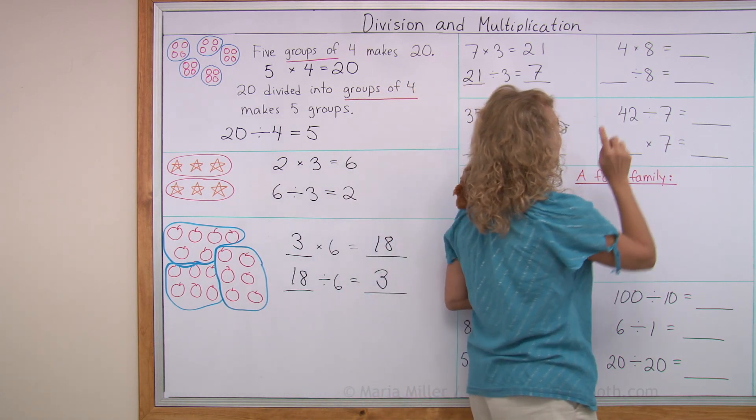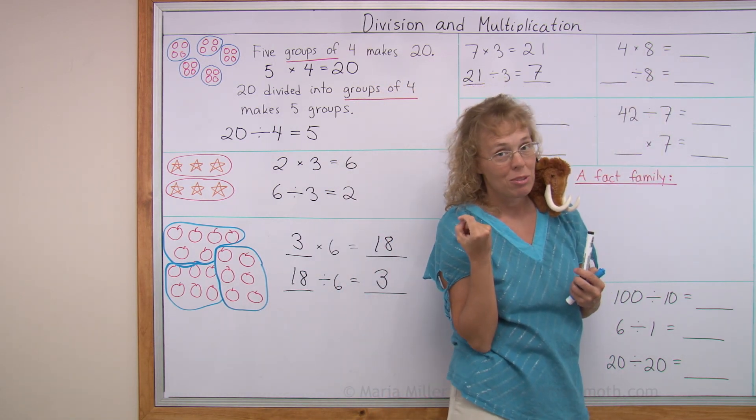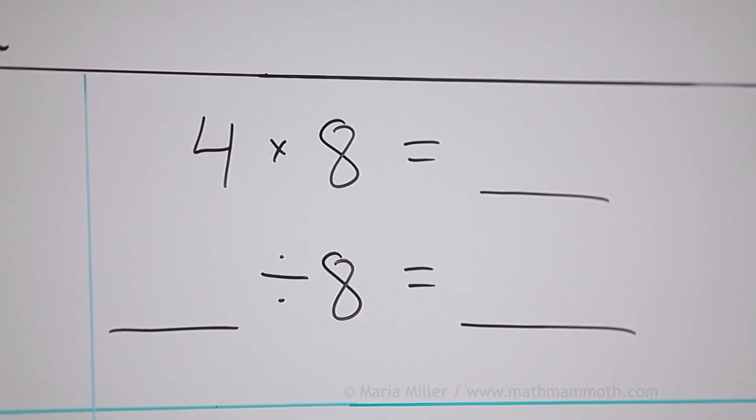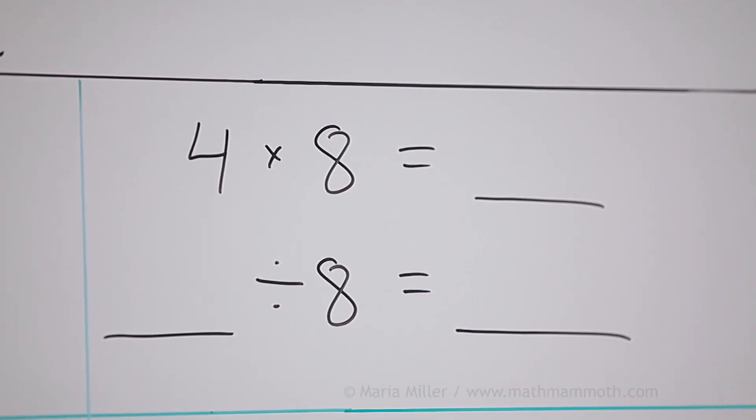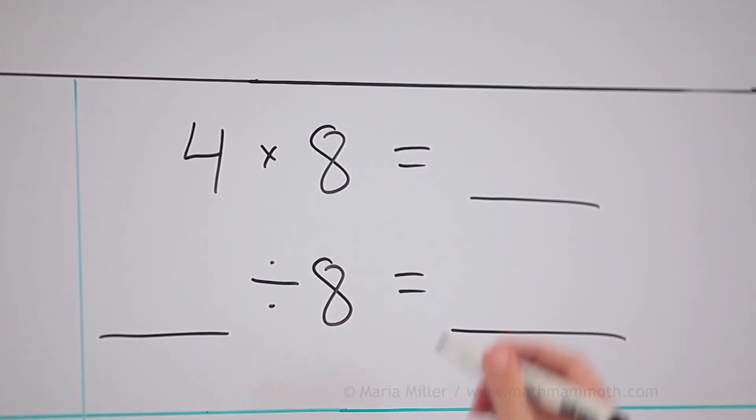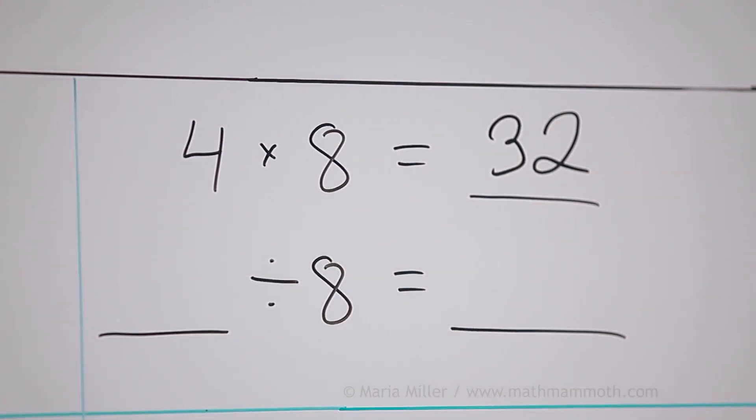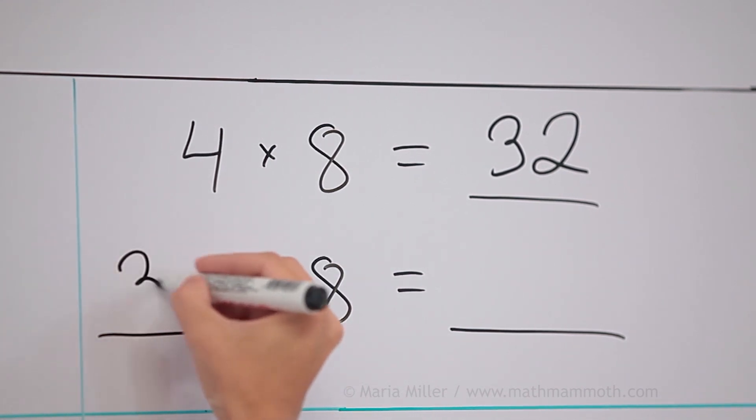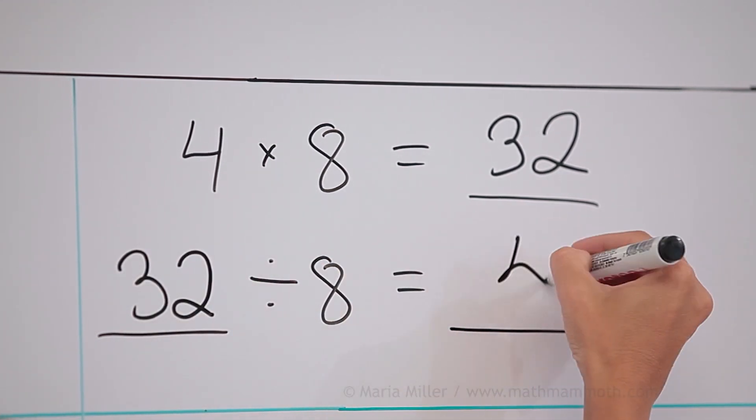And then four times eight. You know your multiplication tables, right? If you don't, you could take two times eight equals 16 and double that, 32. And for the division, can you tell what the division will be? 32 goes here and then four goes here.